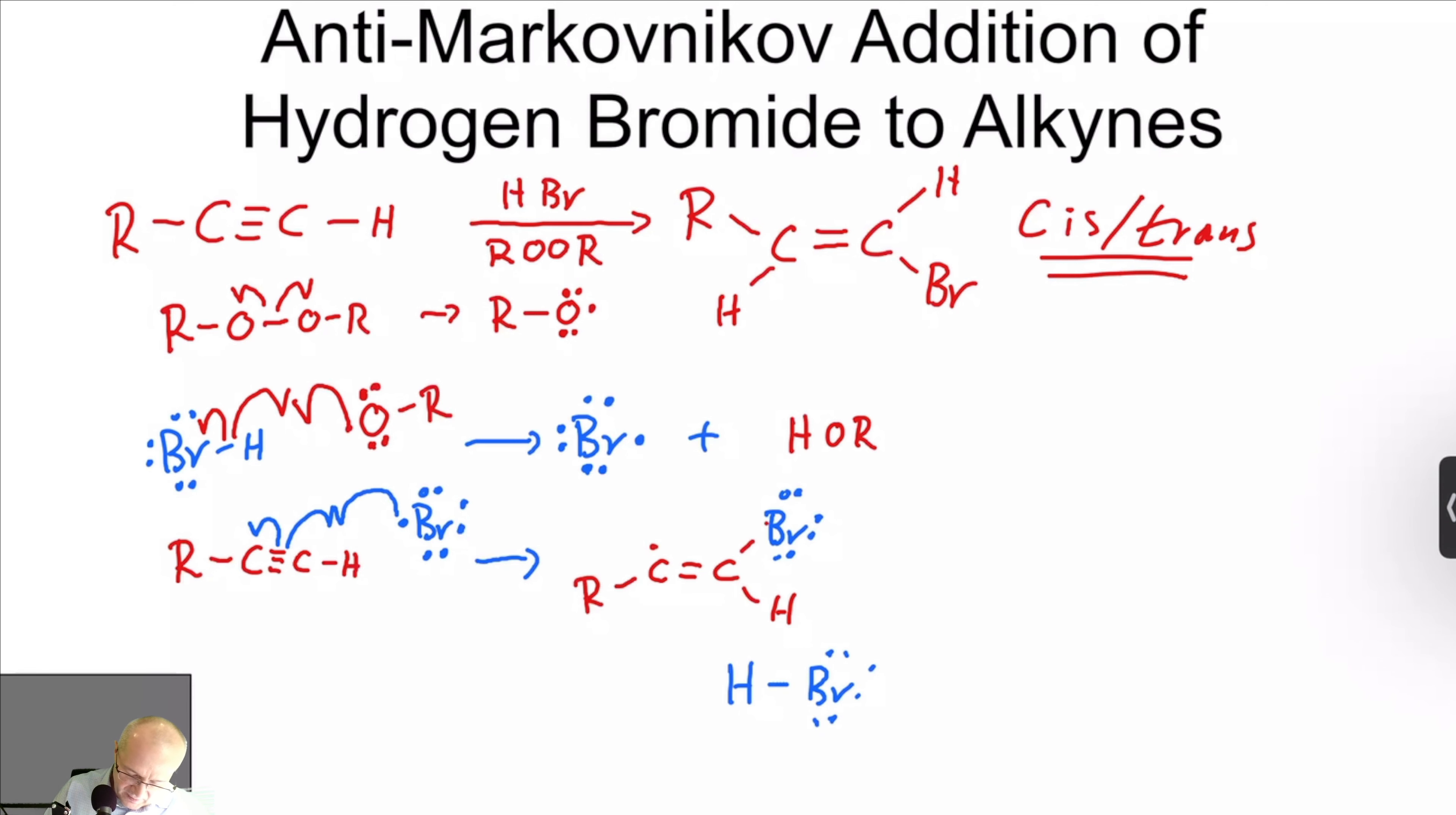There we go. And now, this radical will attack that hydrogen to give you the bromine radical back. And put the hydrogen on the carbon. And plus Br radical. So this chain reaction, of course, so this goes back up to here, does the whole process again.